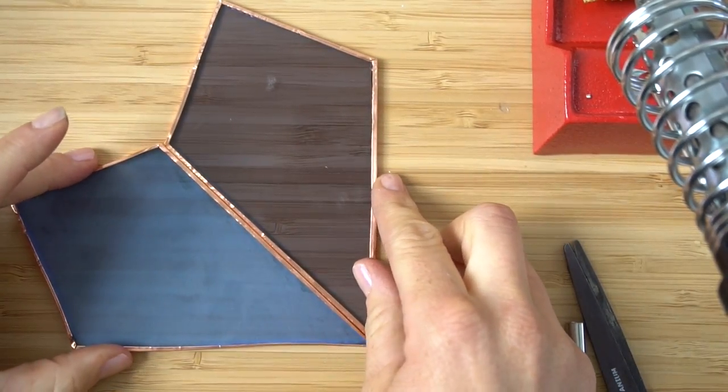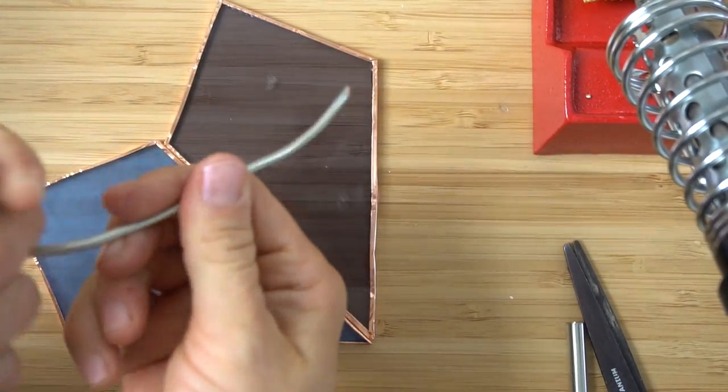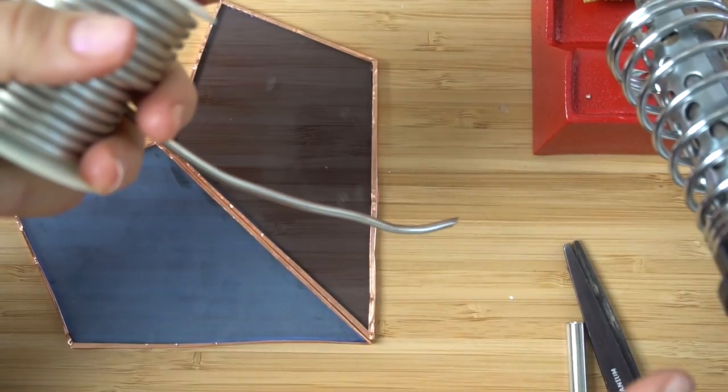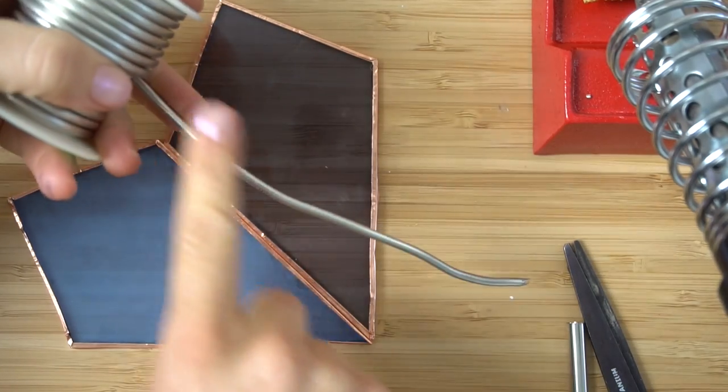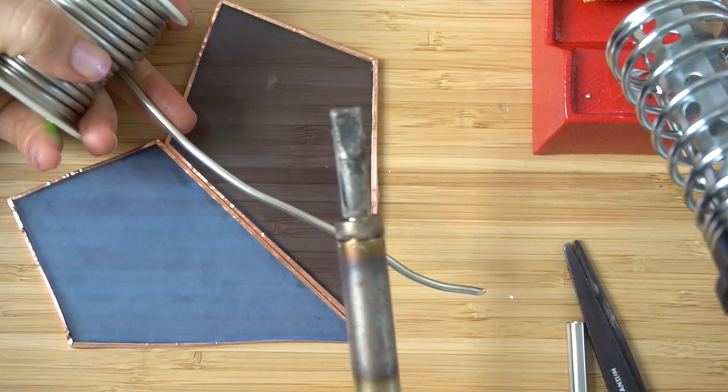Once you've covered it in flux, you are ready to grab the solder. You do not want your hand to be close to the soldering iron, so you leave this nice long piece of it so that your hand is far away from this bad boy.